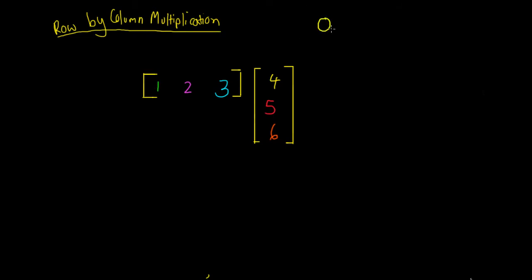What's important is we've talked about this concept of order before — the order of a matrix, or the dimensions of a matrix. This is super important because in matrix multiplication we need our matrices to have some compatible order before we can actually multiply them together. We've looked at this R by C rule: a matrix is defined as a number of rows multiplied by a number of columns, and this is the notation that we use.